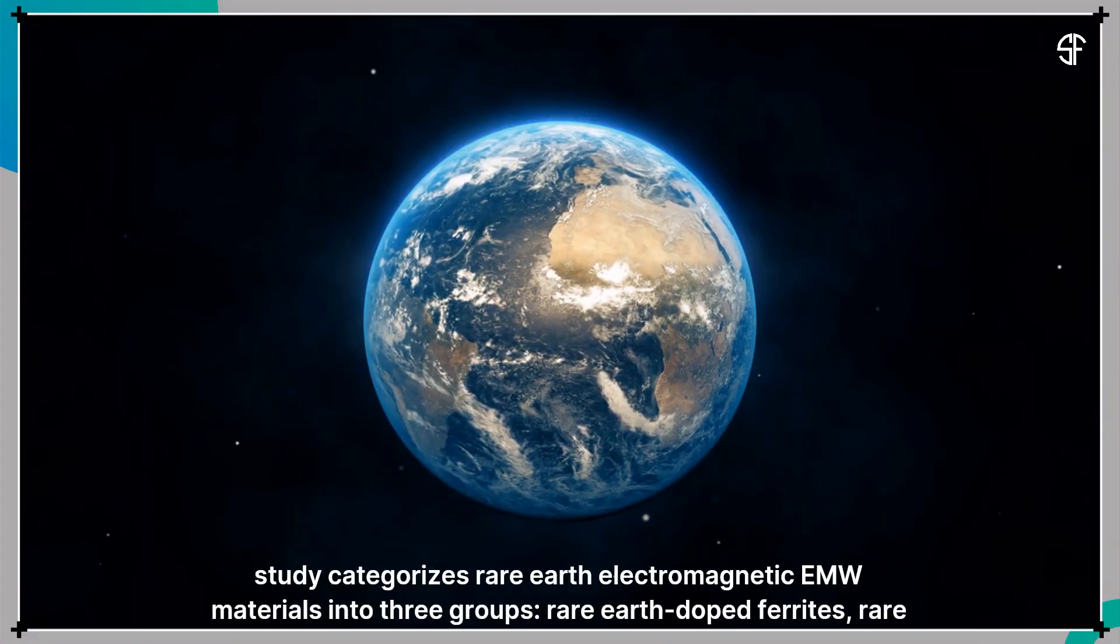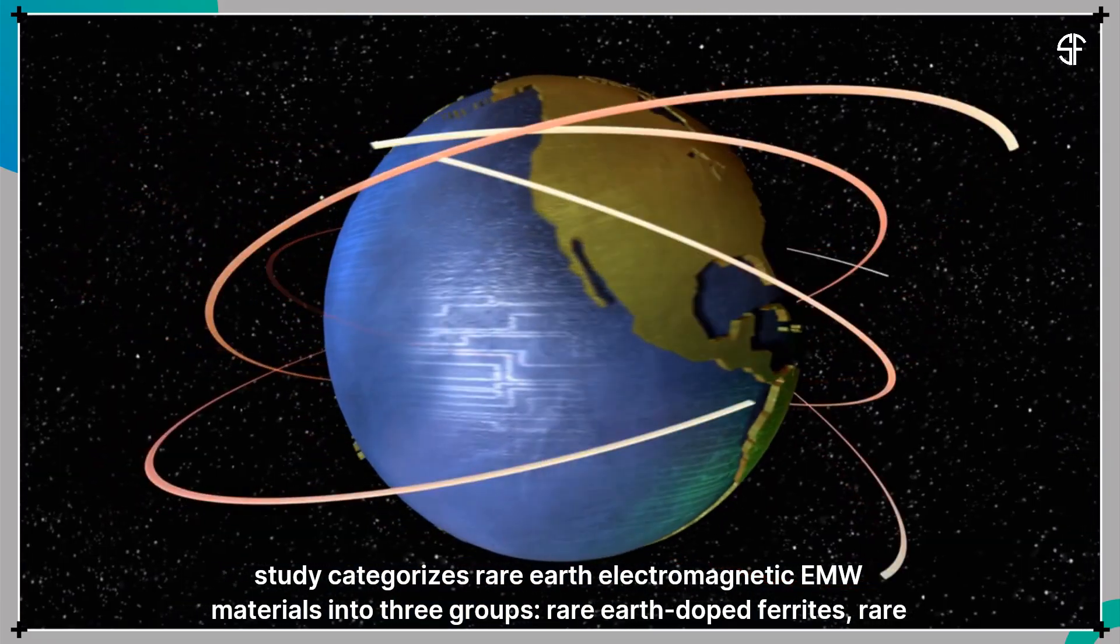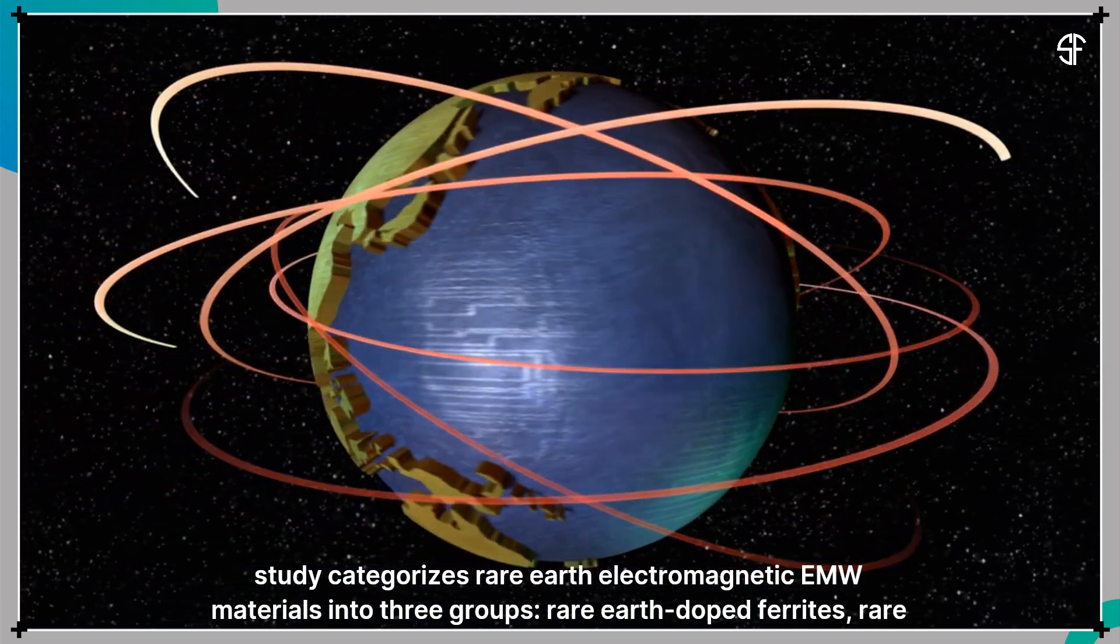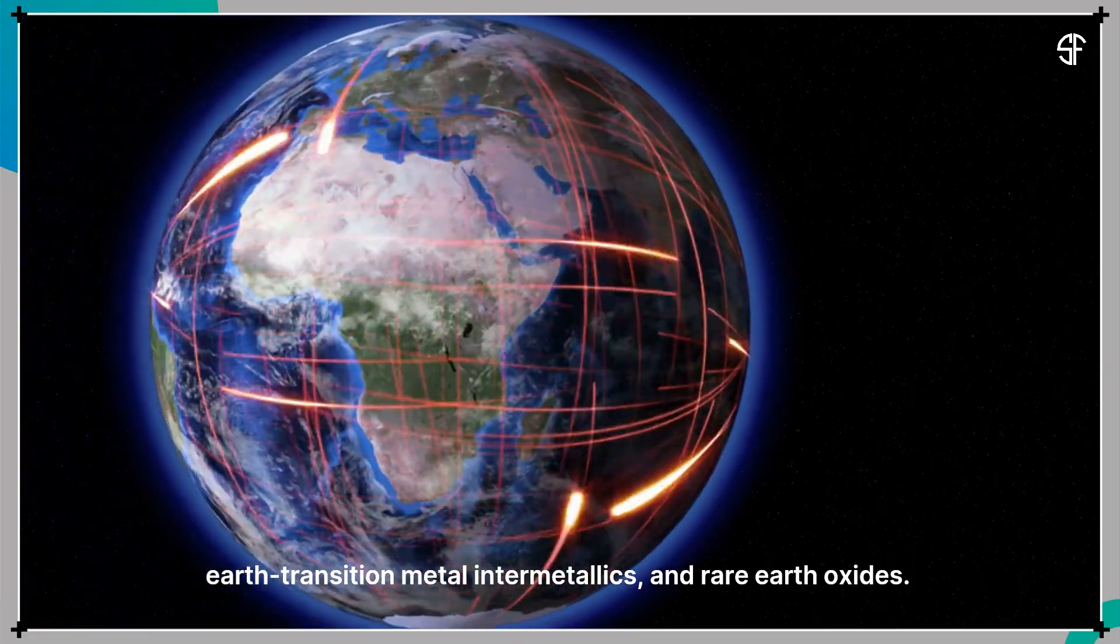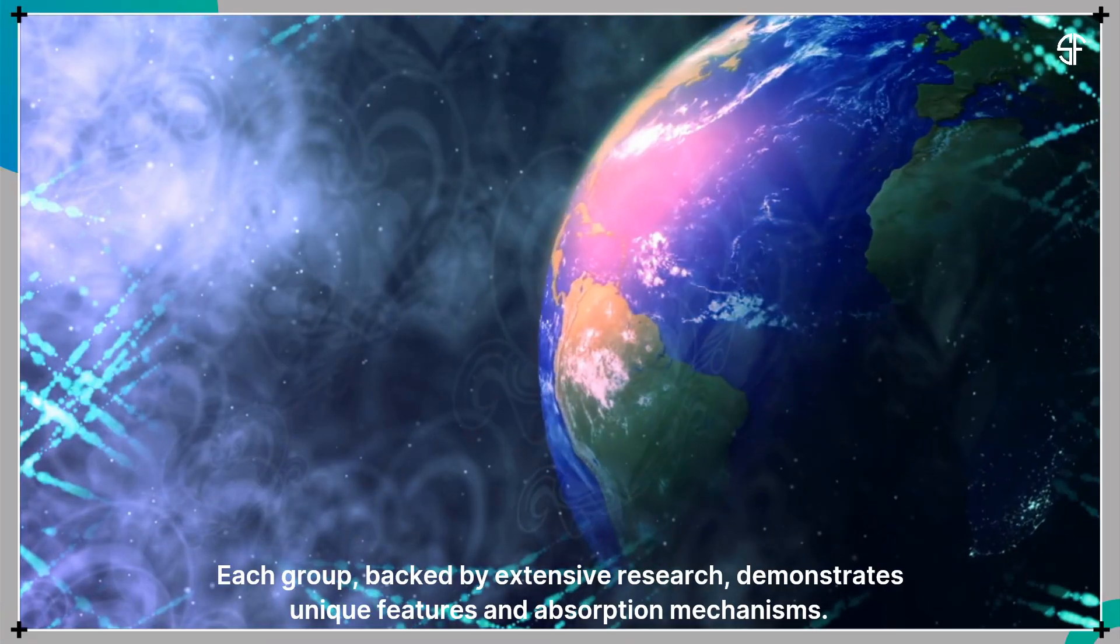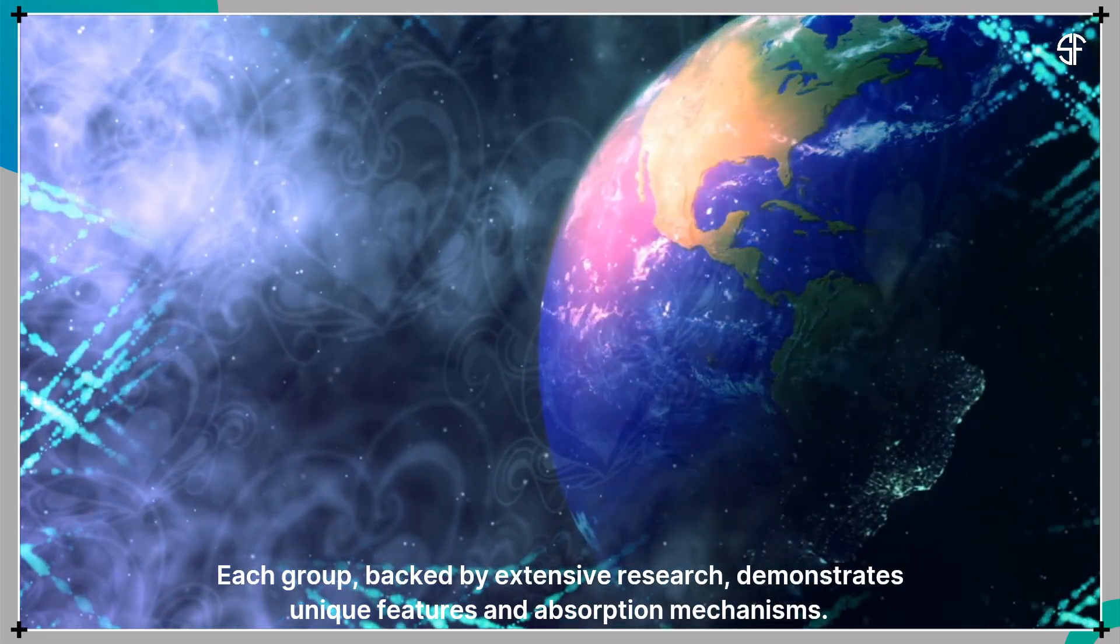The study categorizes rare earth electromagnetic wave absorption materials into three groups: rare earth-doped ferrites, rare earth-transition metal intermetallics, and rare earth oxides. Each group, backed by extensive research, demonstrates unique features and absorption mechanisms.